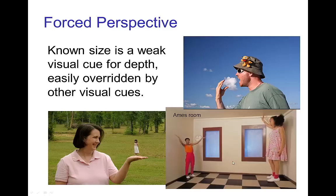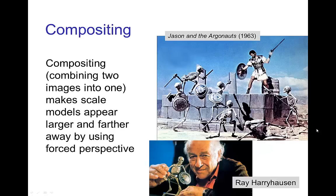A similar distortion is accomplished in an Ames room, where the interior does not have right angles, so even though we know this is not a tiny woman and a giant child, all the other visual cues — like the known patterning of the tile floor — make us perceive a distortion of size. This trick of forced perspective is successfully used in compositing to make scale models appear larger and farther away.